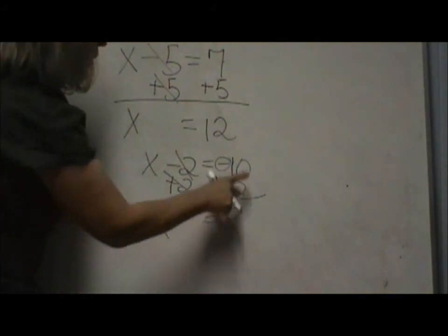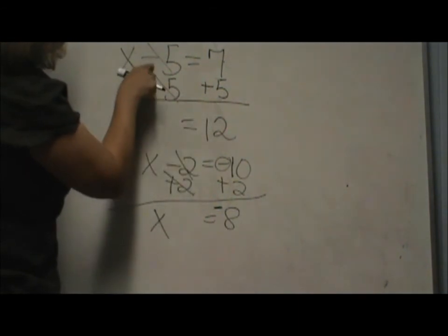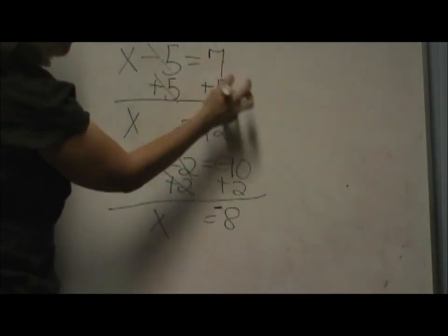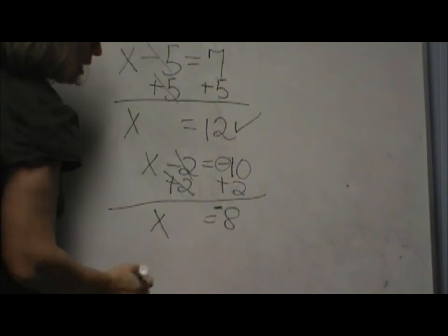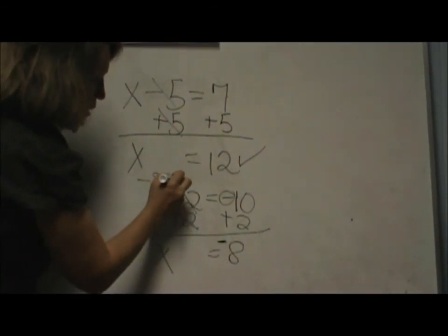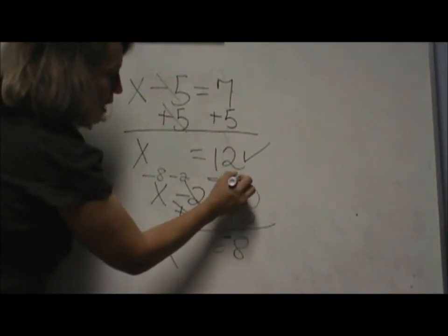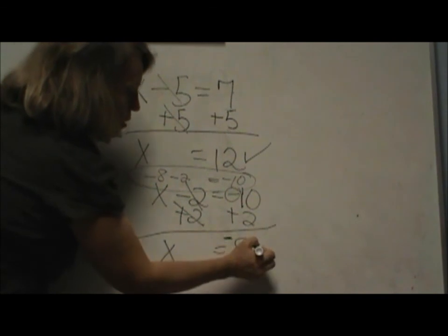And in all equations you can always go back and check it. 12 minus 5 does equal 7. So that one checks. Negative 8. Let's plug it in. Negative 8 minus 2. Same sign you add. And it adds to negative 10. So that is the correct solution also.